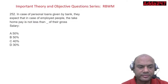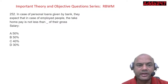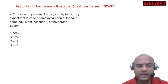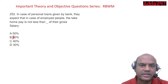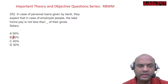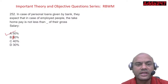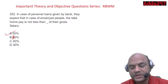In case of personal loans given by the bank, they expect that for employed people, the take-home salary should not be less than 50 percent of the gross salary.